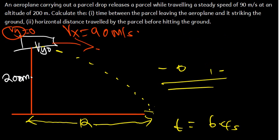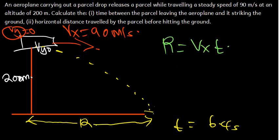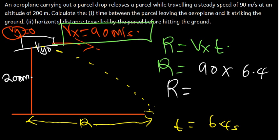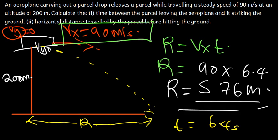The range is always given by the formula: Range = Vx × t. The velocity in the x direction is 90 meters per second, and the time it takes for the parcel to reach the ground is 6.4 seconds. So the range = 90 × 6.4, which gives us 576 meters. That is the range.